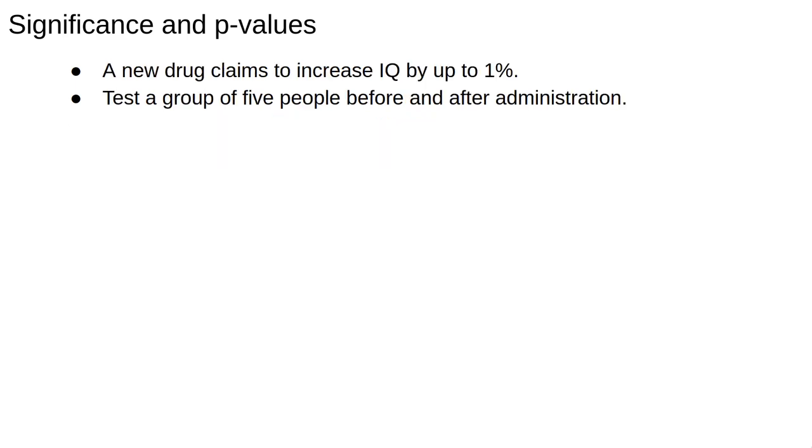A new drug claims to increase IQ by up to 1% if we test a group of 5 people before and after administering the drug. Discounting the potential for the drug to make the IQ go down, we would do a one-tailed test here. A null hypothesis would be something like the IQ difference in the group before and after the drug is less than or equal to 0. The alternative would be that it's greater than 0, that is, there's an effect from the pill.